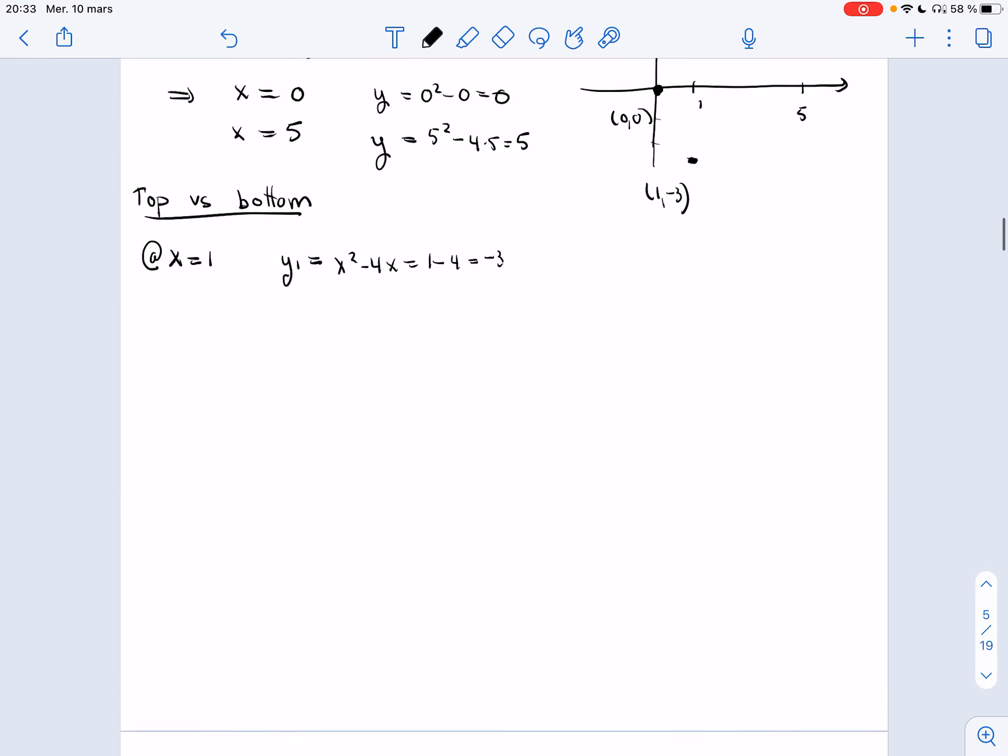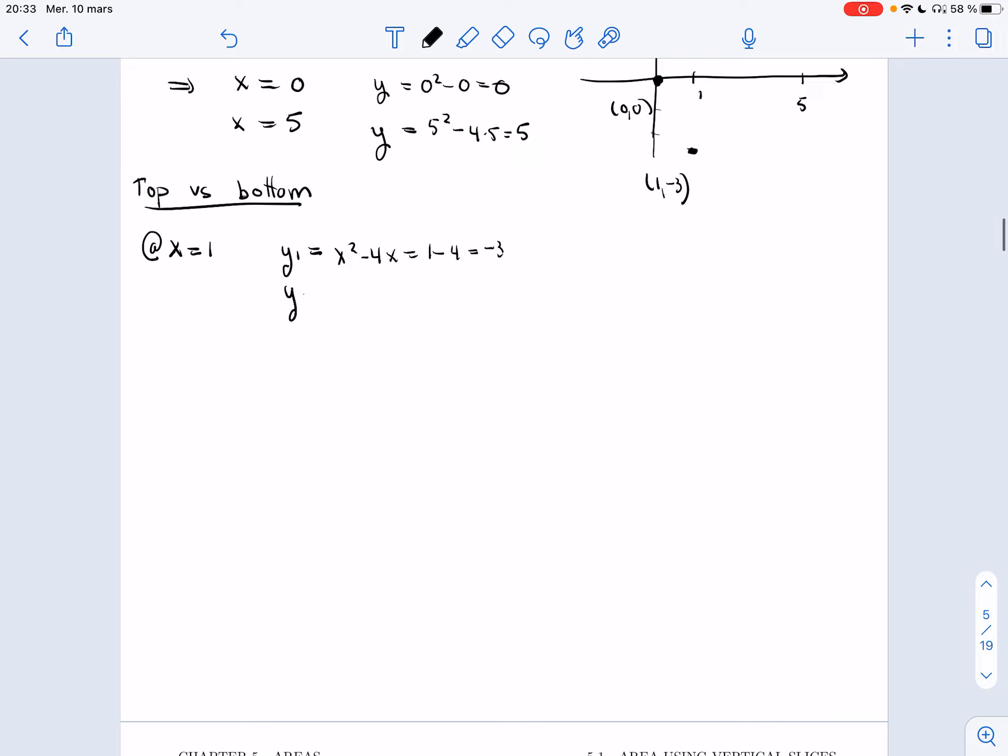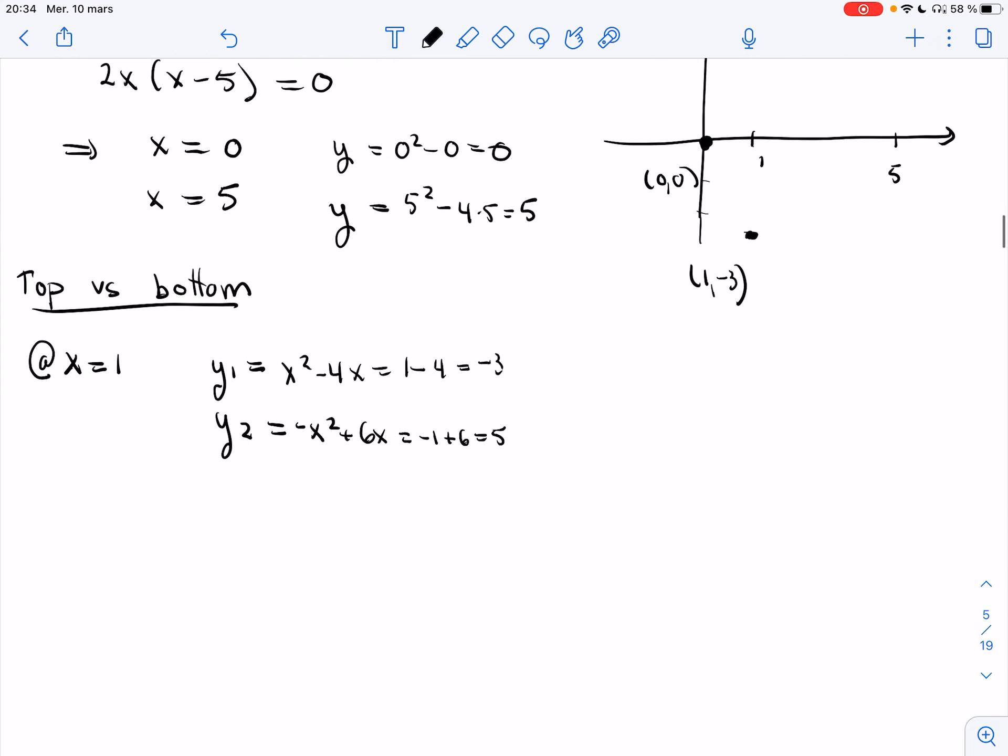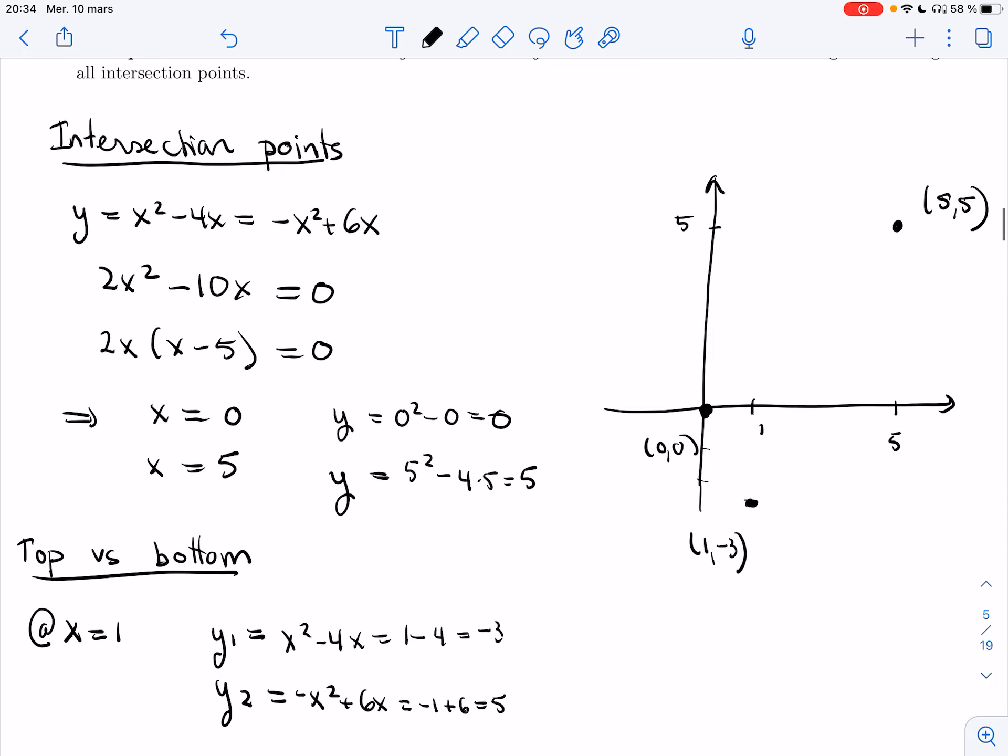Now if I try the second one, the second curve is minus x squared plus 6x. And so if I plug in 1, I get minus 1 plus 6. I get 5. Alright, so while the first curve is at minus 3, the second one is all the way up at 5.